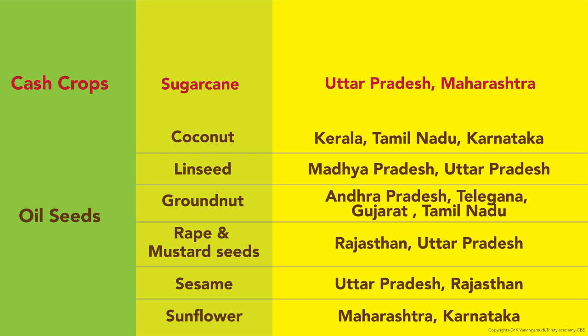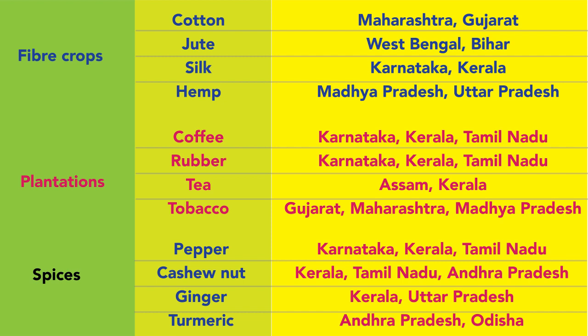Regarding oilseeds: groundnut is cultivated in Andhra Pradesh, Telangana, Gujarat, and Tamil Nadu. Linseed is grown in Madhya Pradesh and Uttar Pradesh. Raps and mustard are grown in Rajasthan and Uttar Pradesh. Sesamum is grown in Uttar Pradesh and Rajasthan. Sunflower is cultivated in Maharashtra and Karnataka.